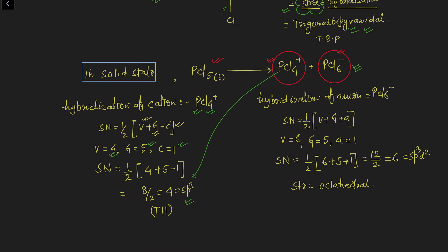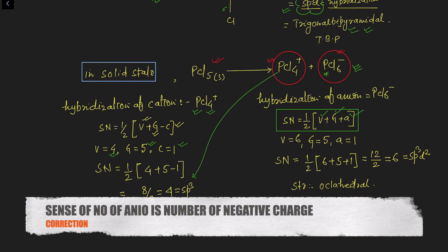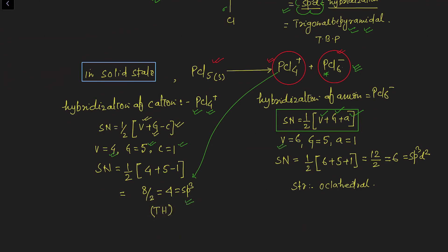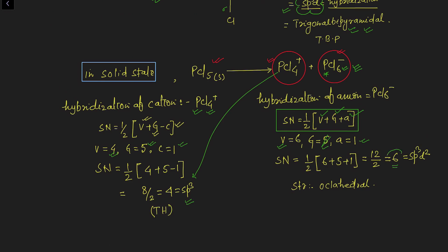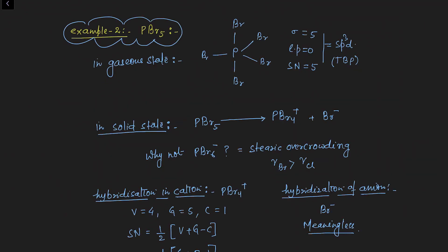Now calculating the hybridization of phosphorus in PCl6−: using the anion formula where v = monovalent atoms (6 chlorines), g = valence electrons of phosphorus (5), and a = number of anion (1), we get steric number 6. Steric number 6 means the hybridization is sp3d2 and the structure is octahedral.